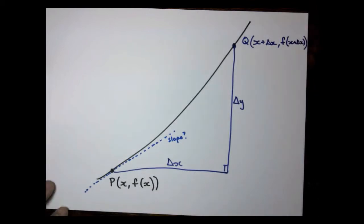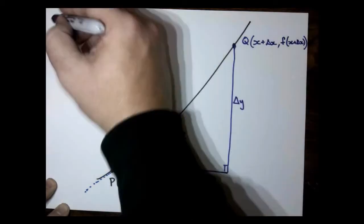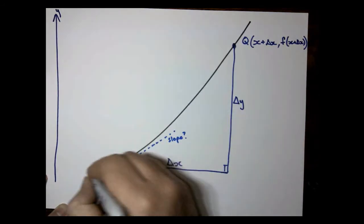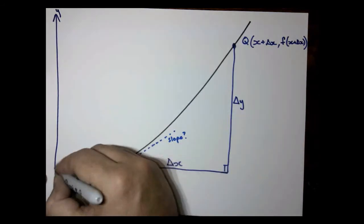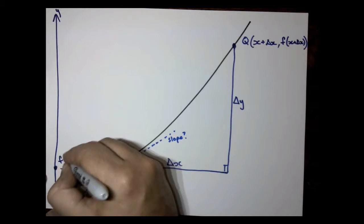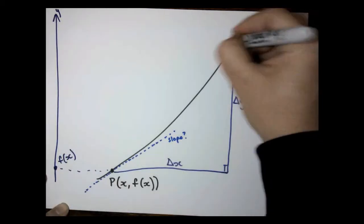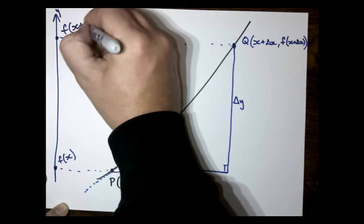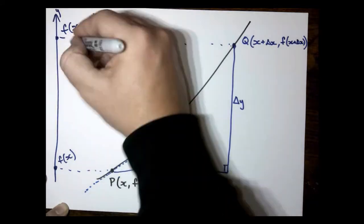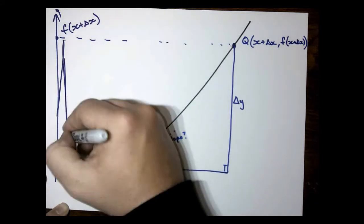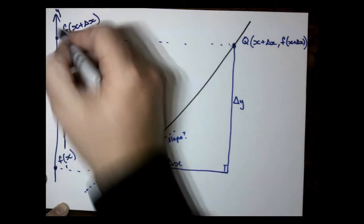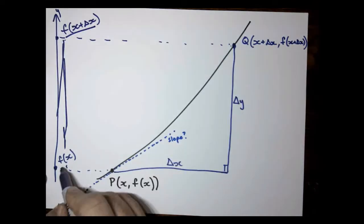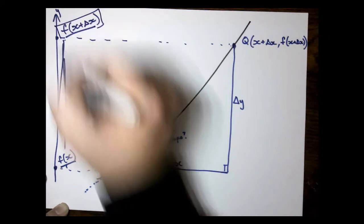So our new y-coordinate is just going to be this input into our function. So f of x plus delta x. We can imagine our y-axis over here. At this point here, on our y-axis, has y-coordinate f of x plus change in x. And we're interested in this gap. How far is it from here to here?